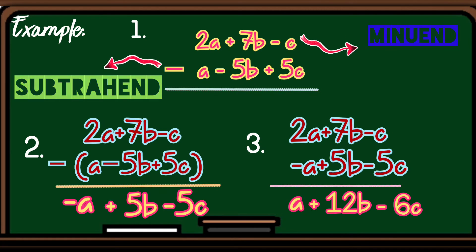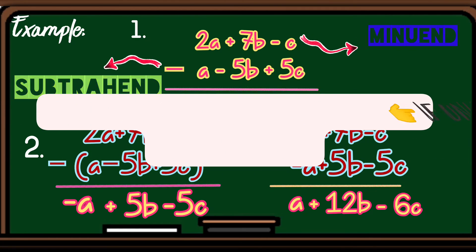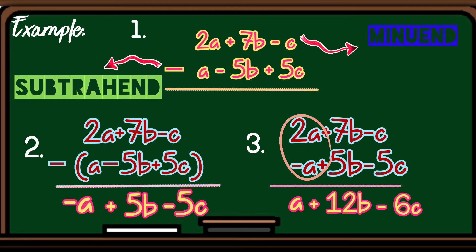2a plus negative a is equivalent to positive a. Bakit naging positive a? Kasi, kung papansin natin, unlike sign siya, so, automatic magma-minus and copy the sign of the bigger number. So, 2 minus 1 is 1, then copy the variable a. Aalisin talaga natin yung 1 sa katabi ng a. Kasi, yun ang sinusunod natin sa rules ng math. So, the answer is a plus 12b minus 6c.